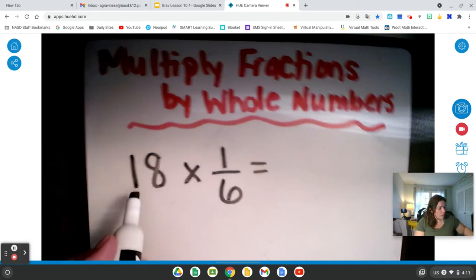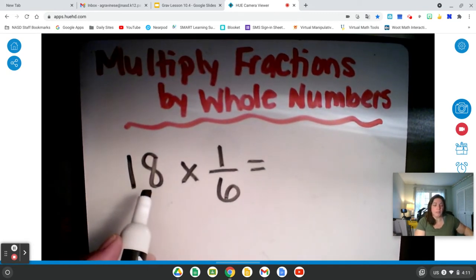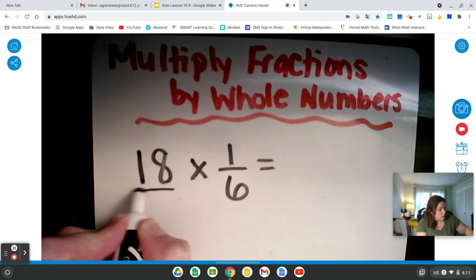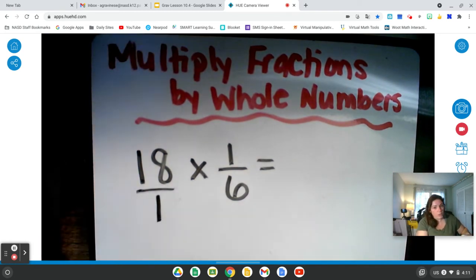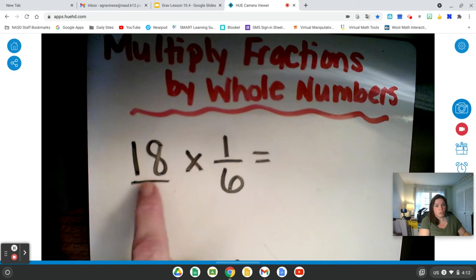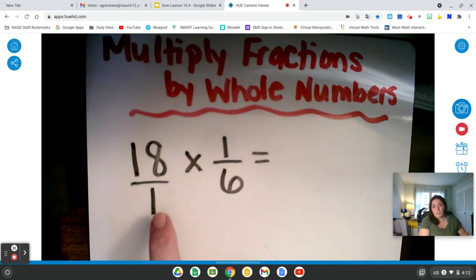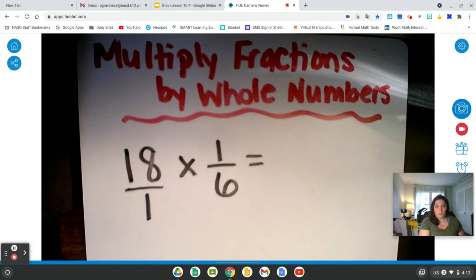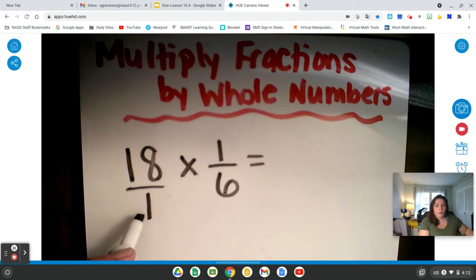First off, when we have a whole number such as 18, you need to remember that 18 can be written as a fraction. 18 is the same thing as 18 over 1. Because remember, 18 over 1 is 18 divided by 1 because fractions mean division. So 18 divided by 1 equals 18. Whenever we have a whole number that we're multiplying by a fraction, we need to turn it into a fraction by making the denominator a 1.